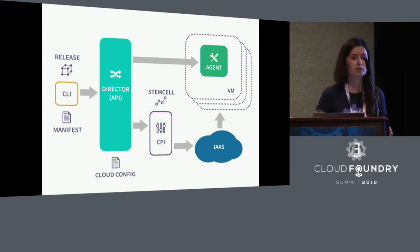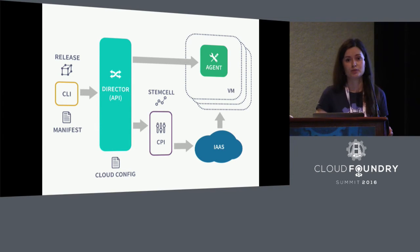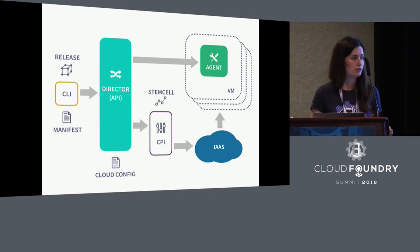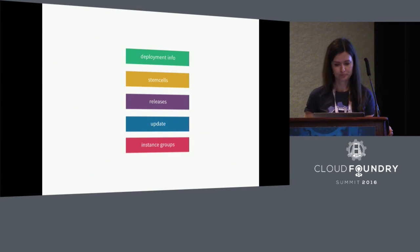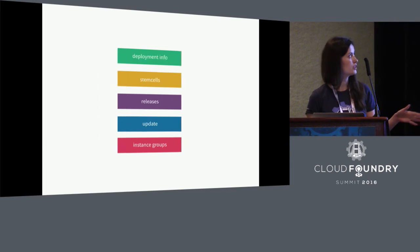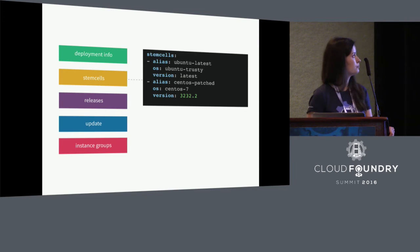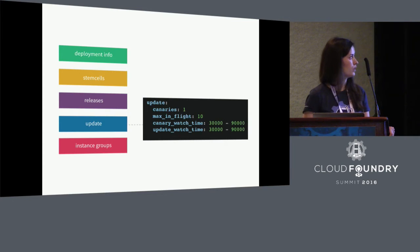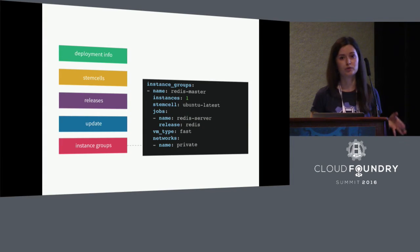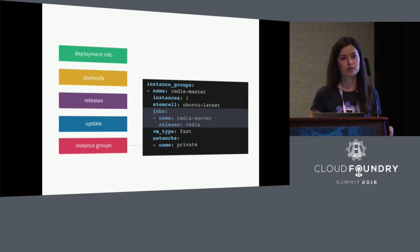In order for software to be runnable on BOSH, it needs to be packaged into a release. The manifest is what ties it all together. The manifest defines your deployment layout, what releases to deploy, and what stem cells to use. Instance groups define what software to install, what stem cells to use to provision VMs, and what jobs from releases to install on that VM.